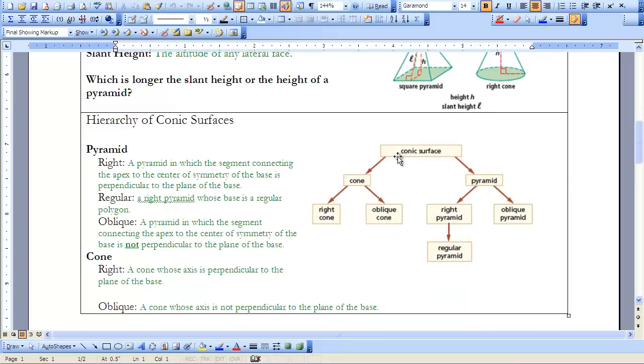We have a hierarchy here. If we look at the conic surfaces broken down by cone and pyramid, we have right and oblique again. A right pyramid would be where the segment connecting the apex to the center of symmetry of the base is perpendicular to the plane of the base.